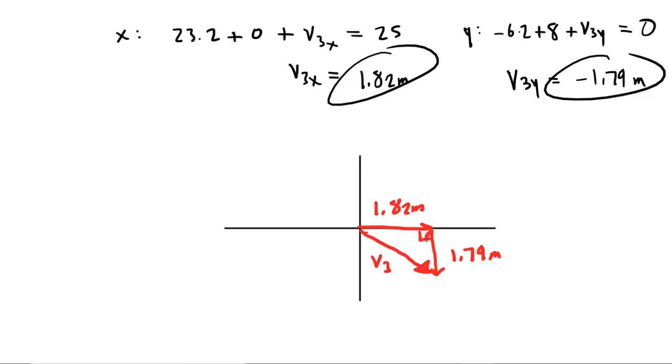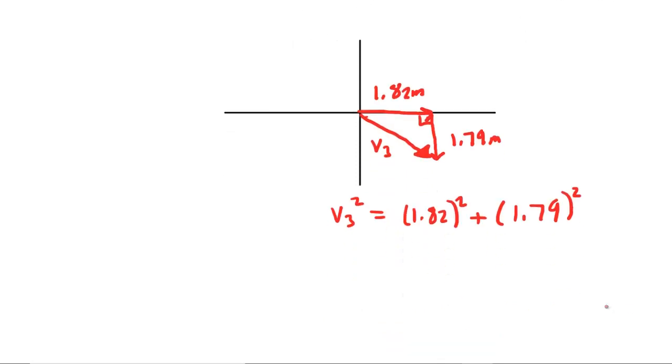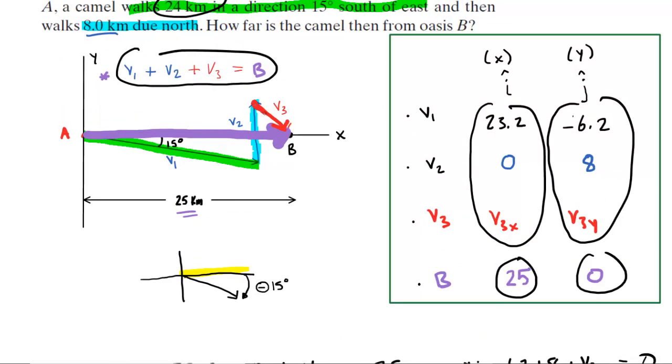We can see from the Pythagorean theorem here that vector 3 squared would equal the X component squared. We'll omit the units for clarity. Plus the Y component squared. Notice it doesn't matter whether you call the Y component positive or negative, really, because you're going to be squaring it. So we can pick up our calculators and we can square both sides or both quantities. So the 1.79 squared plus the 1.82 squared, you get about 6.51. And then take the square root on both sides. And you can see that the overall magnitude of vector 3 is 2.55 meters. So that 2.55 meters is going to be this distance right here between where the camel left off and then Oasis B. So the correct and final answer is 2.55 meters.